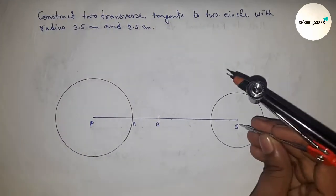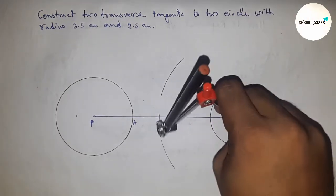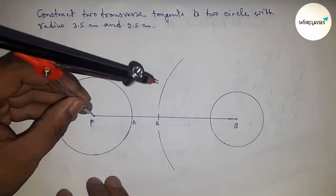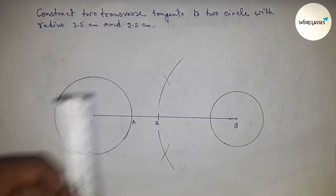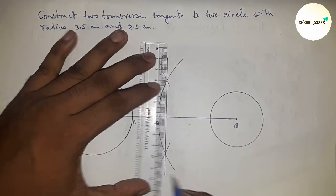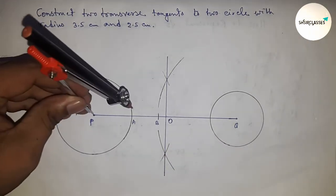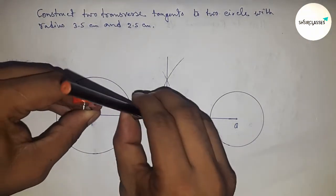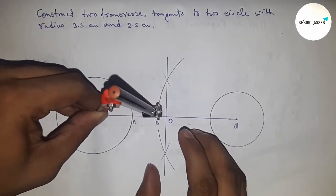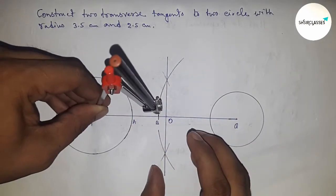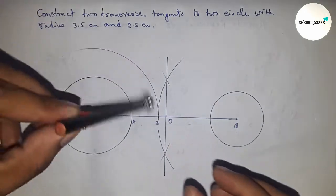Next, bisecting the line PQ and finding the bisecting point O. Then drawing a circle with radius PB centered at point P.